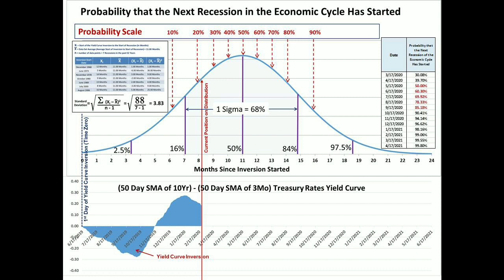Aligning the zero-month position with the first day of the yield curve inversion, this curve indicates that right now, February 23rd, 2020, there is an approximate 23% chance that a recession has already started, but the chances quickly increase each month — rising to 85% by September 2020 and as high as 97% by the end of 2020. One caveat: usually we do not know we are in a recession until a few months have passed and revisions to the economic data are made. This has been the norm for almost every single recession.